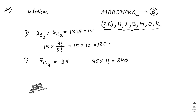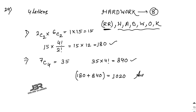Total: Case 1 gives 180, Case 2 gives 840. So the total number of 4-letter words = 180 + 840 = 1020 as your final answer.